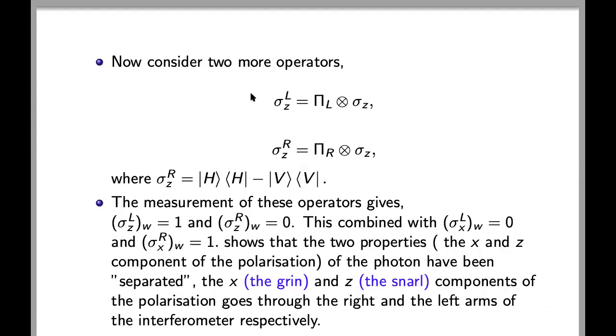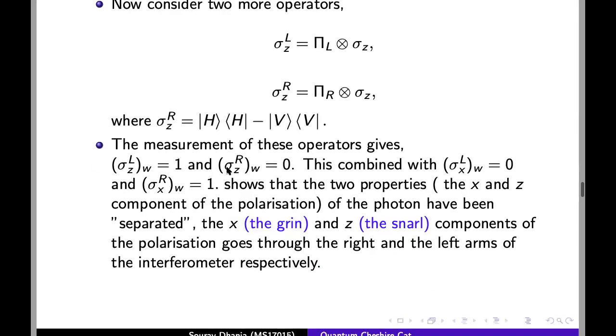Now consider two more operators, sigma zl and sigma zr. This will measure which arm of the interferometer z component of the polarization goes through, and is defined like this. Now the measurement of these operators gives these values from which we can see that the z component of the polarization went through the left arm.